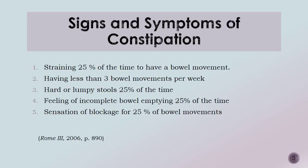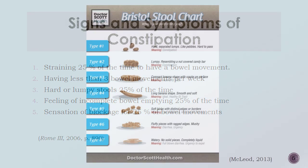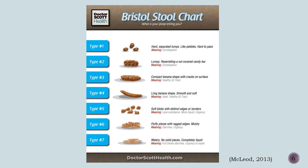A handout will be given to you for home use with the Rome 3 criteria. The Bristol Stool Chart is another visual aid that will be given to you for home use and can help identify constipation.